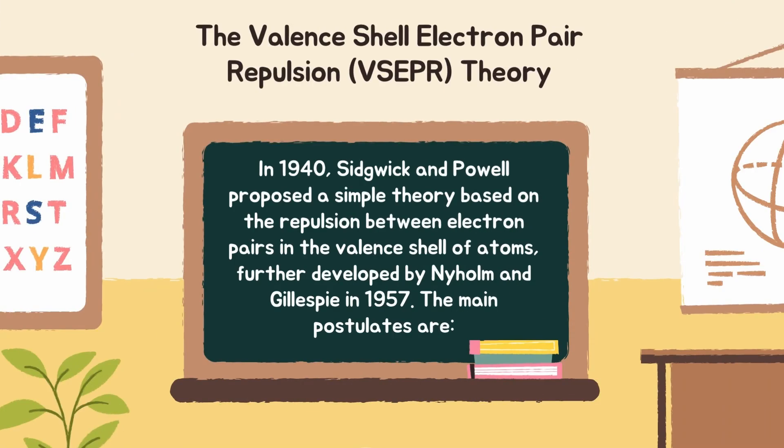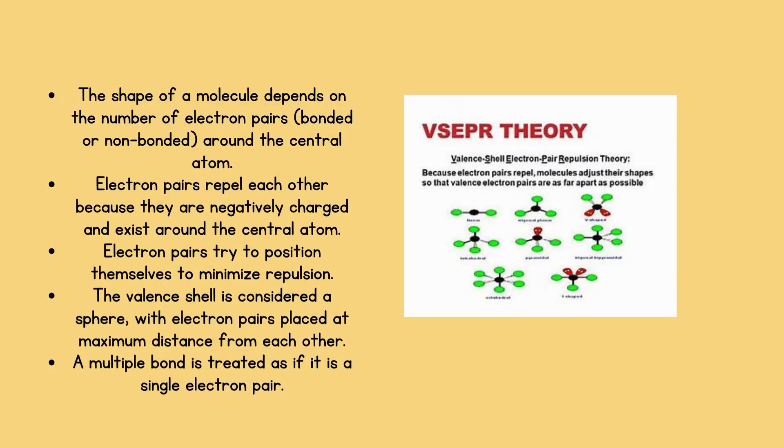Moving forward with the valence shell electron pair repulsion theory or VSEPR theory. In 1940, Sidgwick and Powell proposed a simple theory based on the repulsion between electron pairs in the valence shell of atoms further developed by Nyholm and Gillespie in 1957. The main postulates are: the shape of a molecule depends on the number of electron pairs, bonded or non-bonded, around the central atom. Electron pairs repel each other because they are negatively charged and exist around the central atom. Electron pairs try to position themselves to minimize repulsion. The valence shell is considered a sphere with electron pairs placed at maximum distance from each other. A multiple bond is treated as if it is a single electron pair.